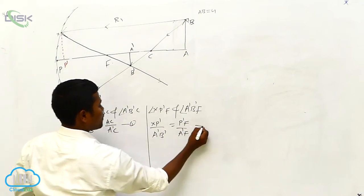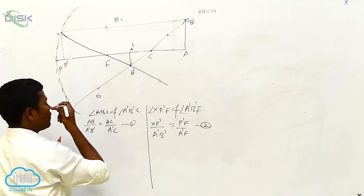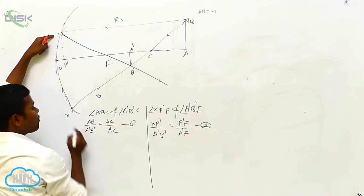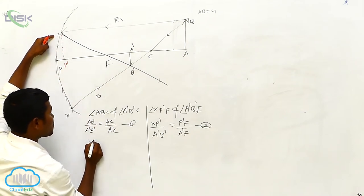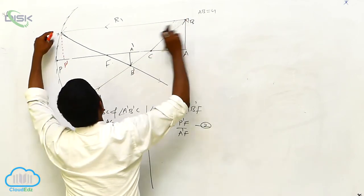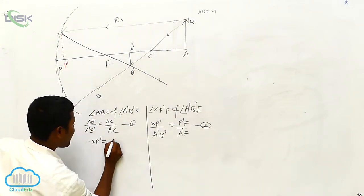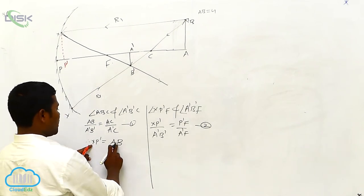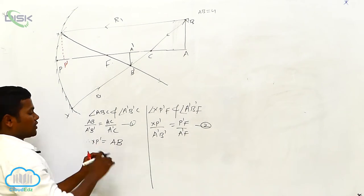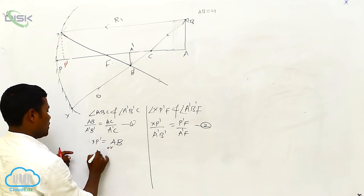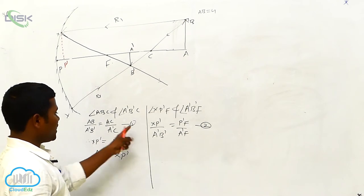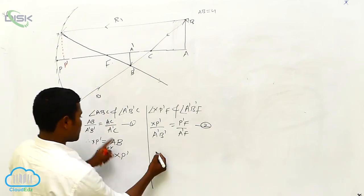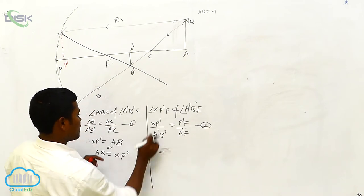Equation one and equation two are established. Since this is a paraxial ray — very near to the principal axis — the height of XP-dash equals the height of AB. So XP-dash equals AB. This value can be substituted into equation one or equation two; that is your choice. I am substituting it into equation two.